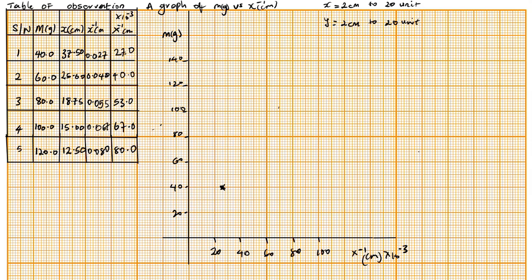Next point: when m is 60, x inverse is 40. So this is where I'll have my point here. Next, when m is 80, x inverse is 53. This is your 50, and this is your 60. Each tiny line represents 2 units, so 50 is here at 80. So 53 should be somewhere here.